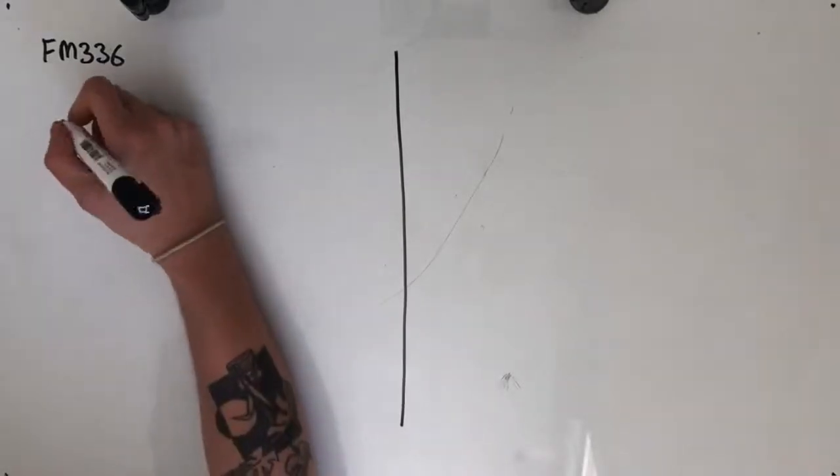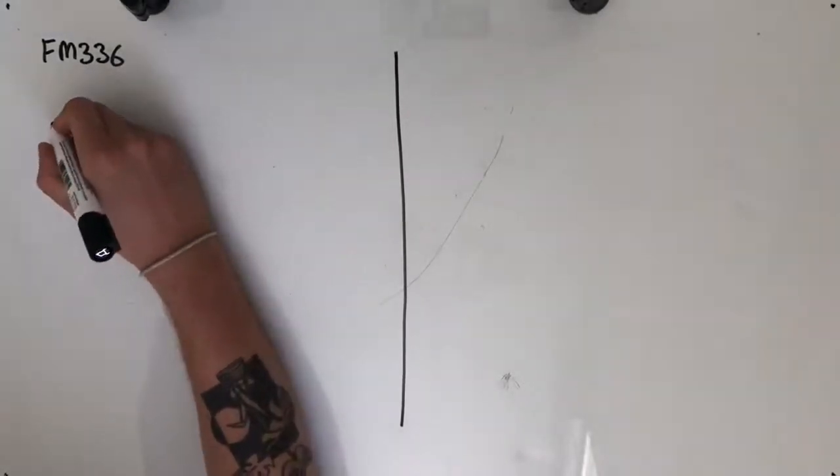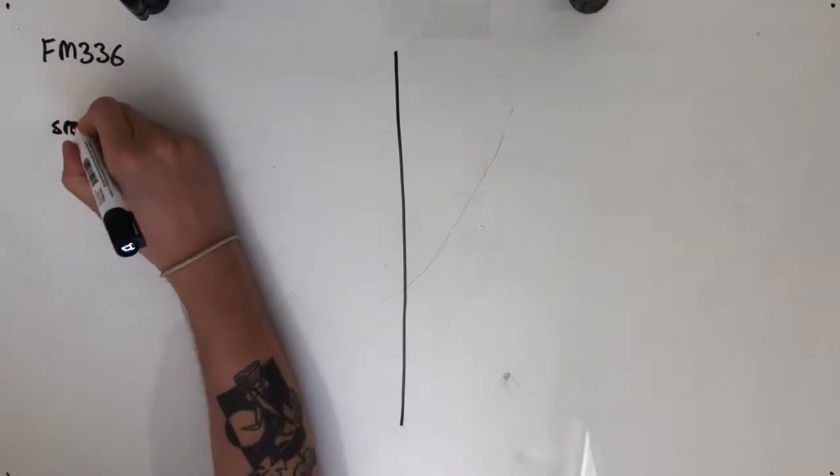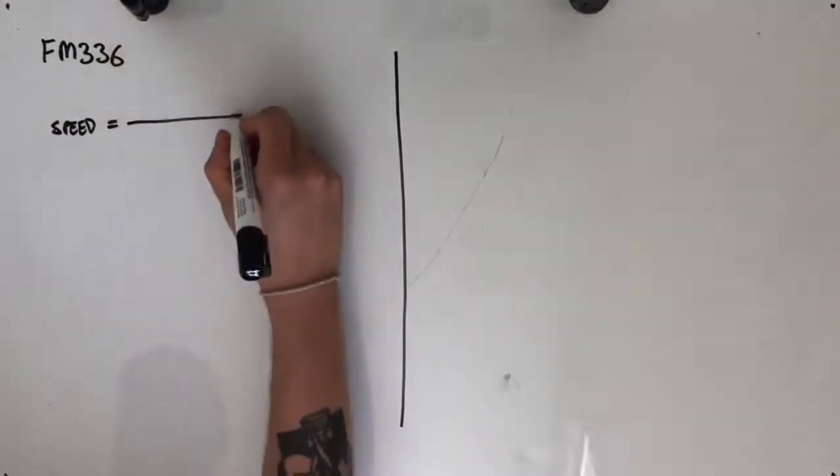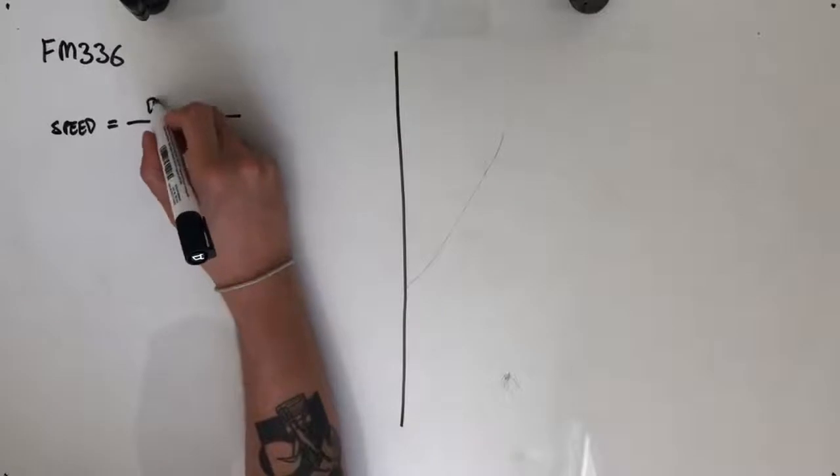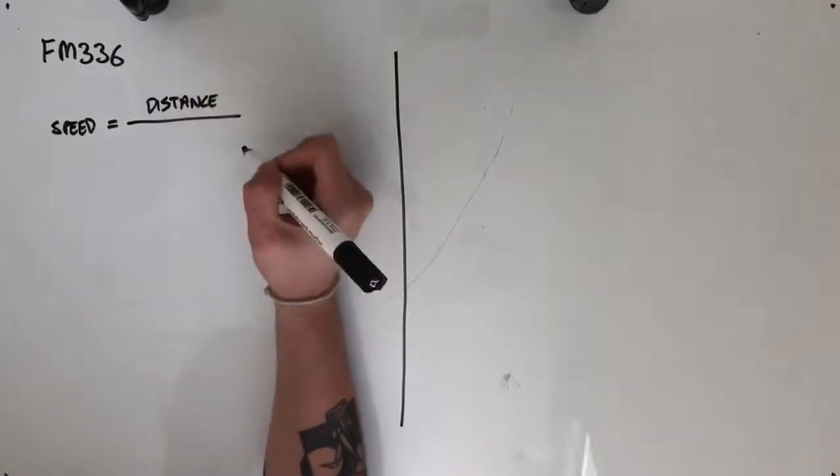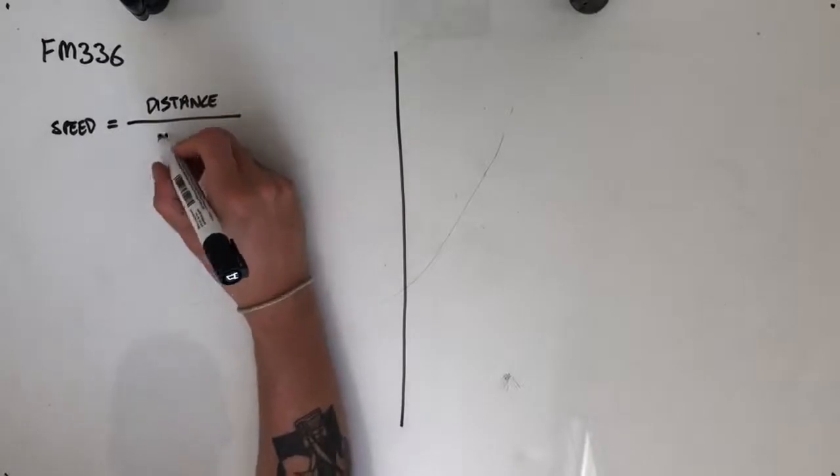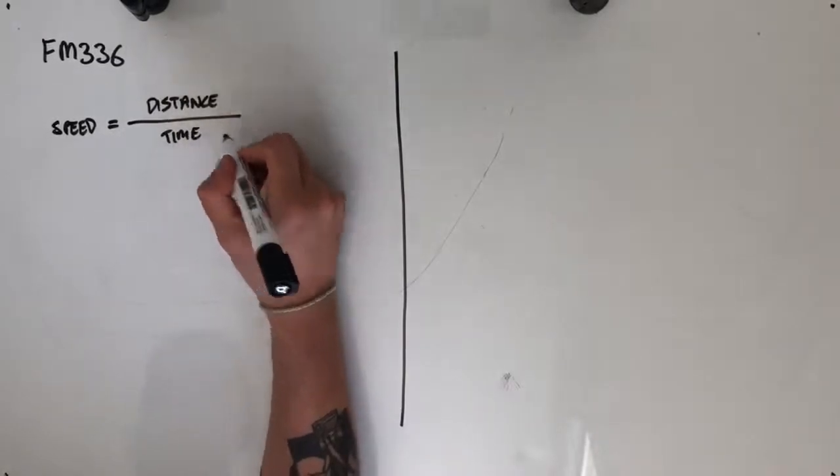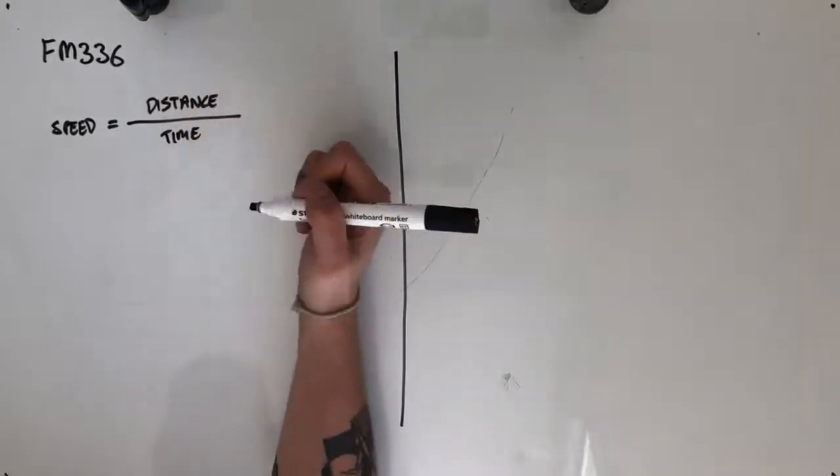We're going to have to break this question down a fair bit. What we want as a final answer is a speed. We can get a speed by taking a distance in kilometres over a time in hours to get an answer in kilometres per hour.